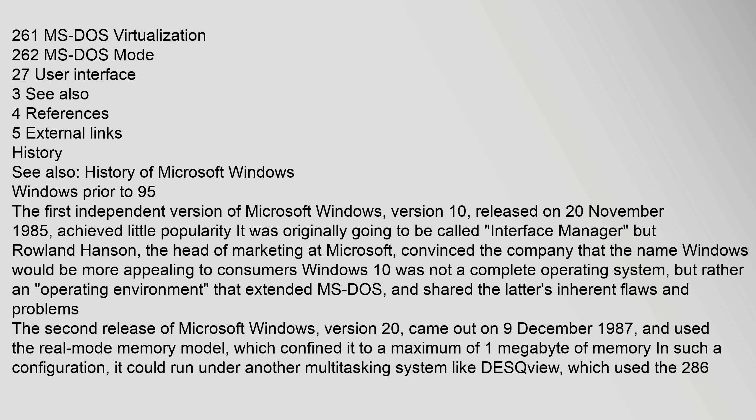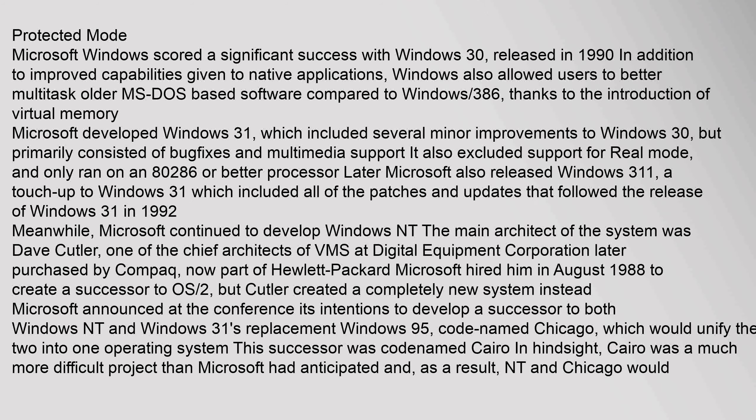The second release of Microsoft Windows, version 2.0, came out on 9 December 1987, and used the real mode memory model, which confined it to a maximum of 1 megabyte of memory. In such a configuration, it could run under another multitasking system like DeskView, which used the 286 protected mode.